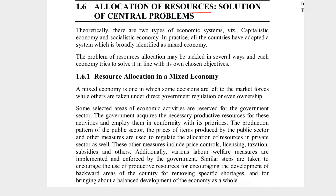Now let us talk about what we need to keep in mind while we allocate our resources. Theoretically, there are only two types of economic systems. Economic system, or economy, means country — there are two types of countries in terms of economy. One is capitalistic and the other is socialistic.